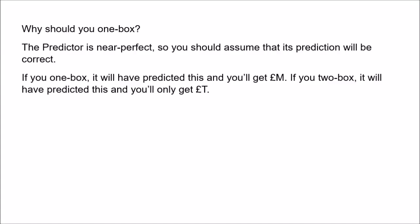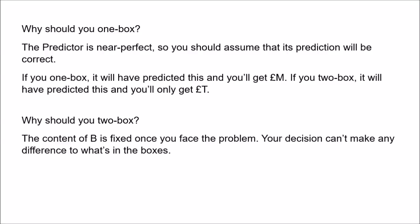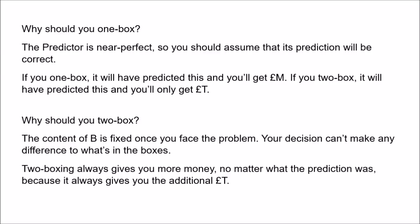On the other hand, why should you two-box? The main intuition here is that the content of Box B is fixed once you're presented with the problem. The predictor makes its prediction, puts in the money, and then you're given the problem. Your decision won't make any difference to what's in the boxes. If the million is in there, choosing two boxes won't make it disappear. And if it isn't in there, choosing only one box won't make it appear. So the crucial point for the two-boxer is: two-boxing always nets you more money, no matter what the prediction was. Two-boxing dominates one-boxing. No matter what the predictor does, you're better off taking both boxes.